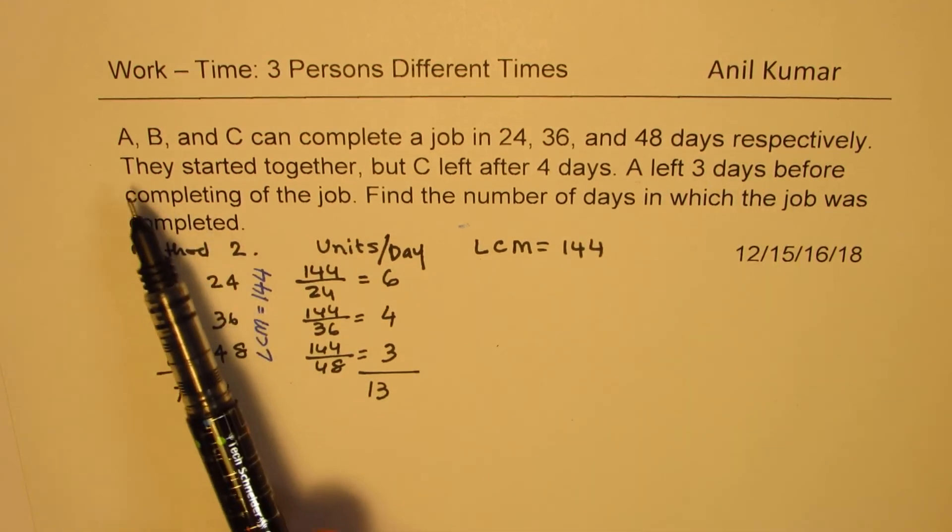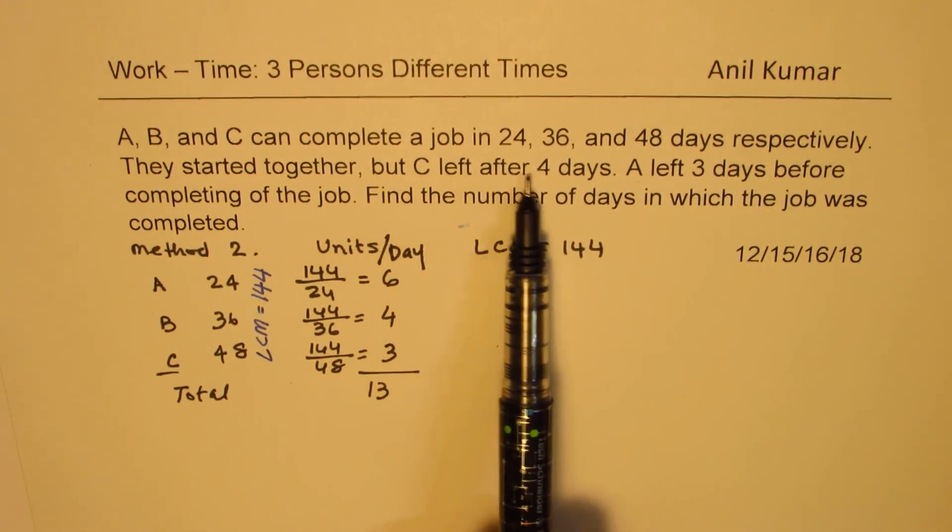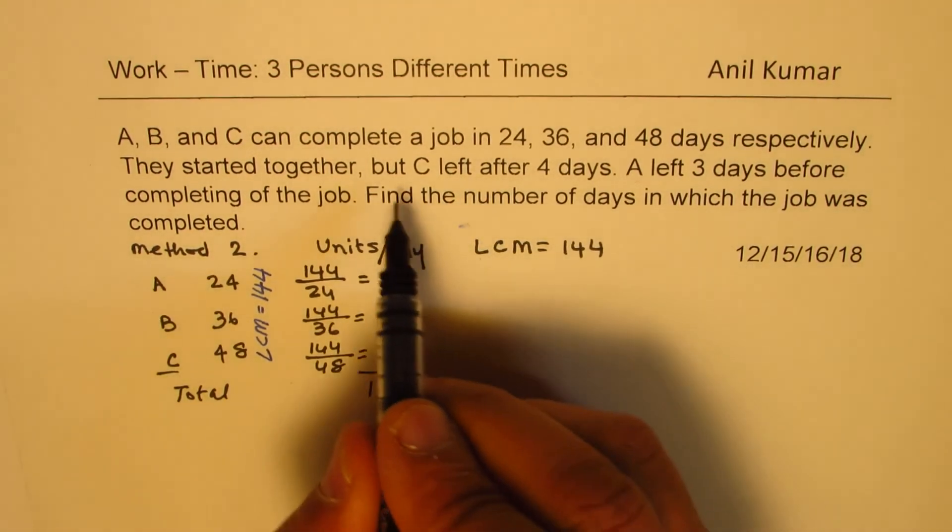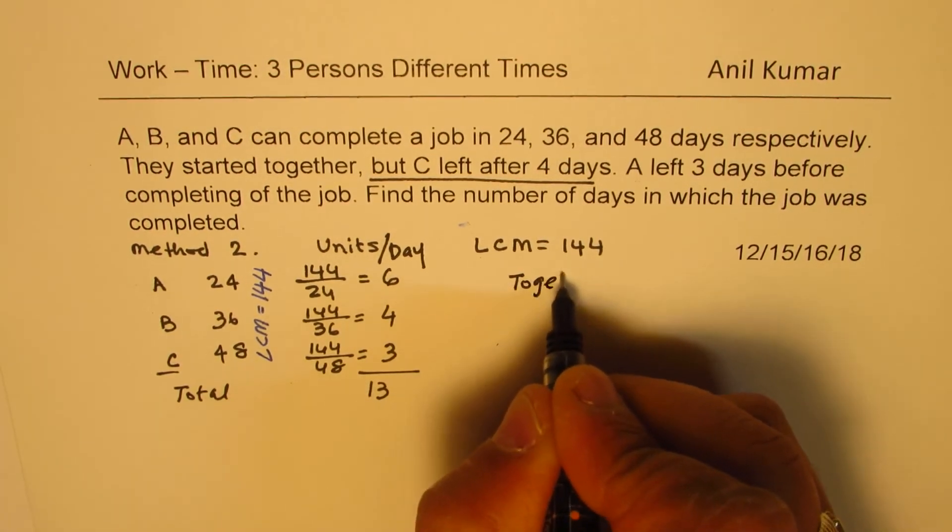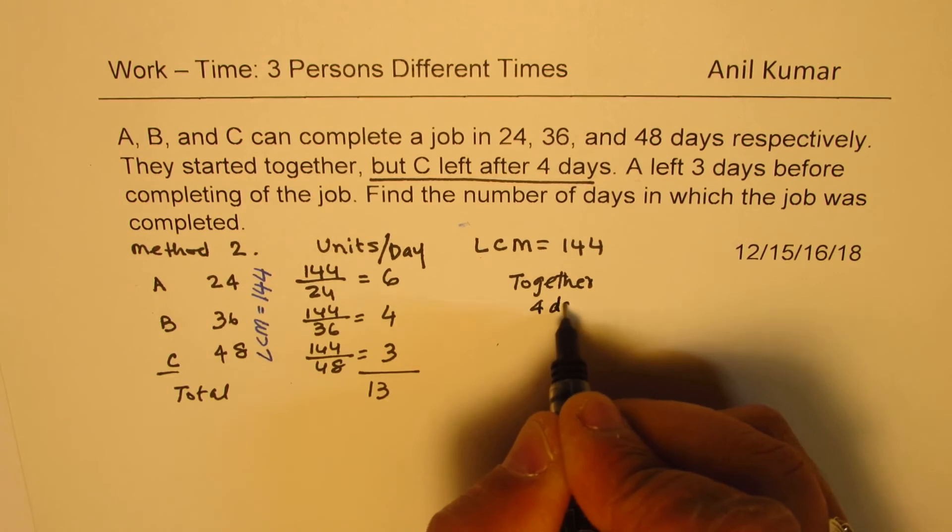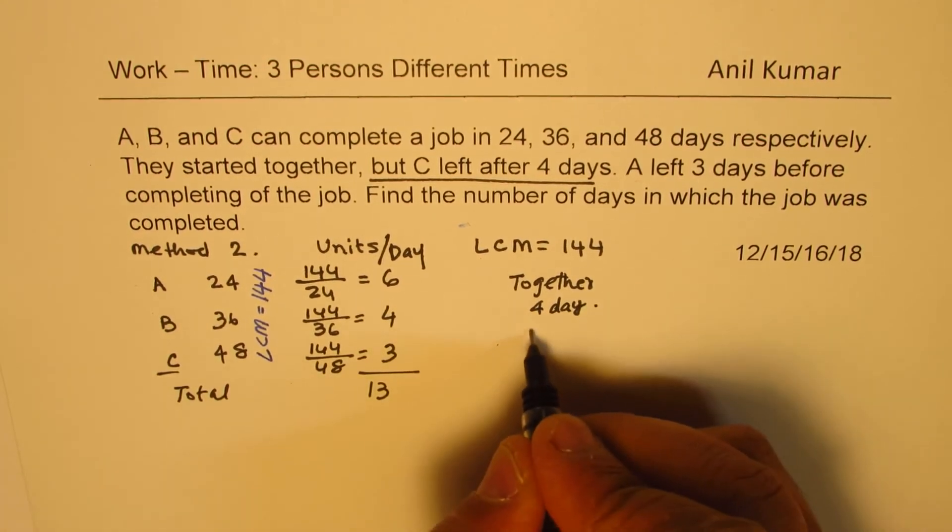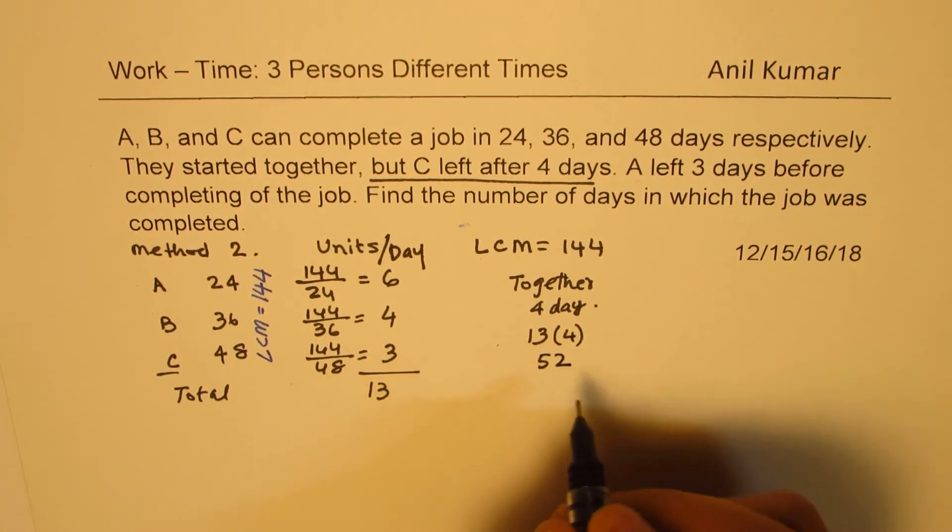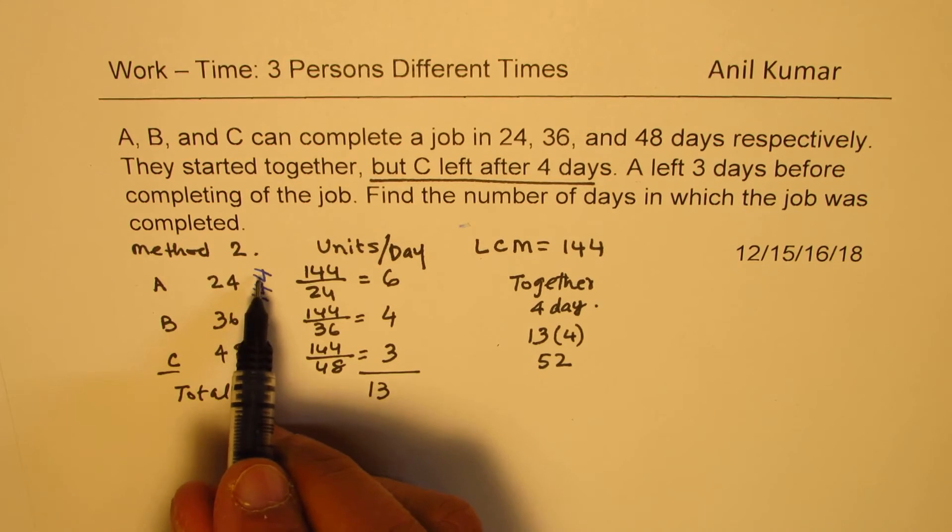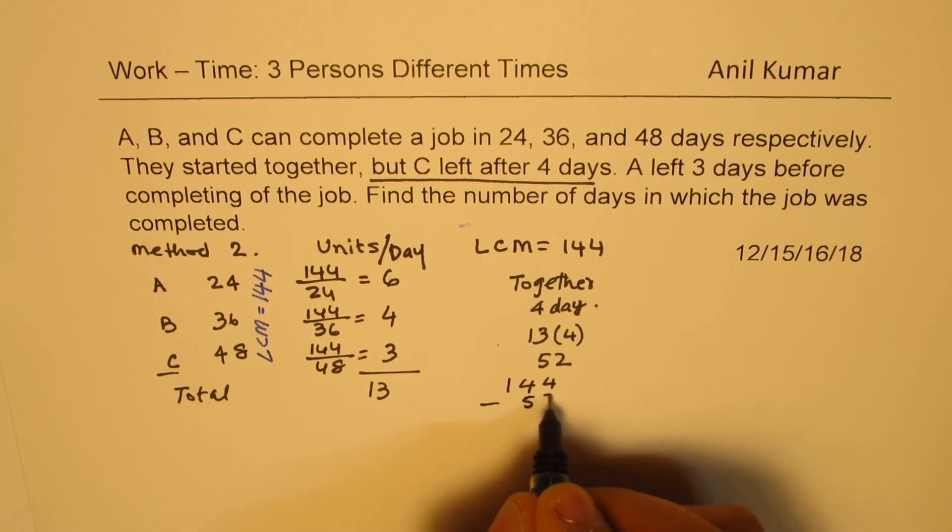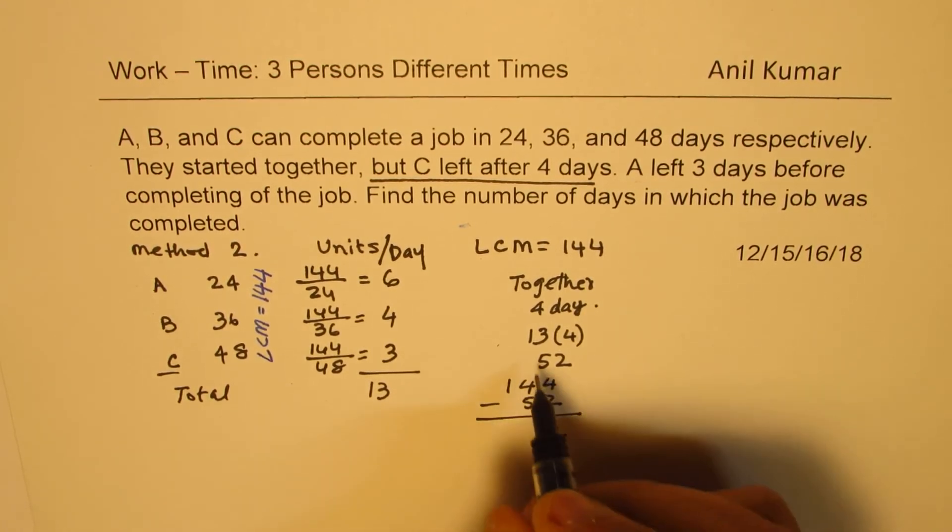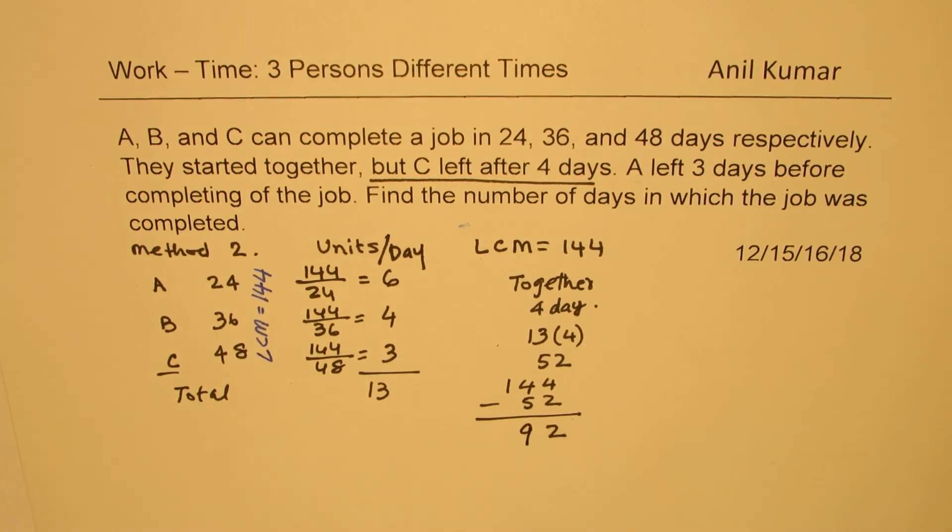Now let's look into the equation. It says they started the work together, but C left after 4 days. That means, for 4 days, they work together. So together is 13 units, that means 13 units and 4 days, which is 52. So 52 units have been consumed out of 144. So balance left, 144 minus 52, we get 92 units left.